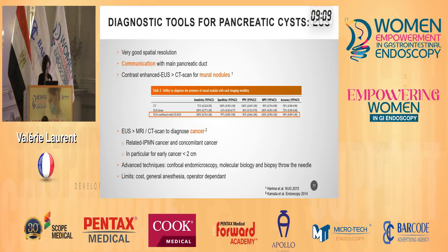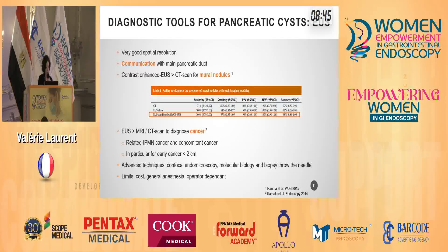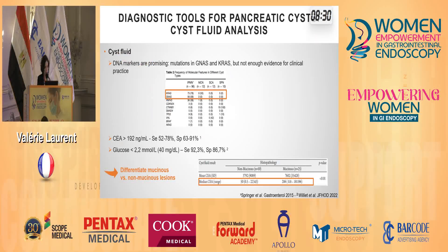EUS is another diagnostic tool with very good spatial resolution. It can identify communication with the main pancreatic duct very well. With contrast, we can see mural nodules very well, with an accuracy of around 98%. EUS is also better than CT scan to diagnose cancer. The main limits are the cost and the need for general anesthesia. If necessary, thanks to EUS we can perform a biopsy to take some cyst fluid. DNA markers are promising but not available for clinical practice. We can also test CEA and glucose, and the measurement allows you to differentiate mucinous from non-mucinous lesions.